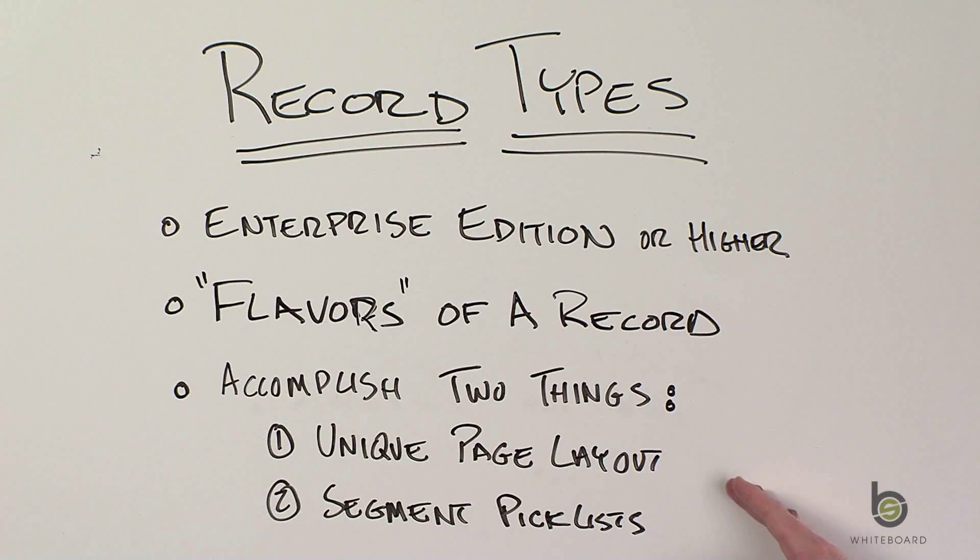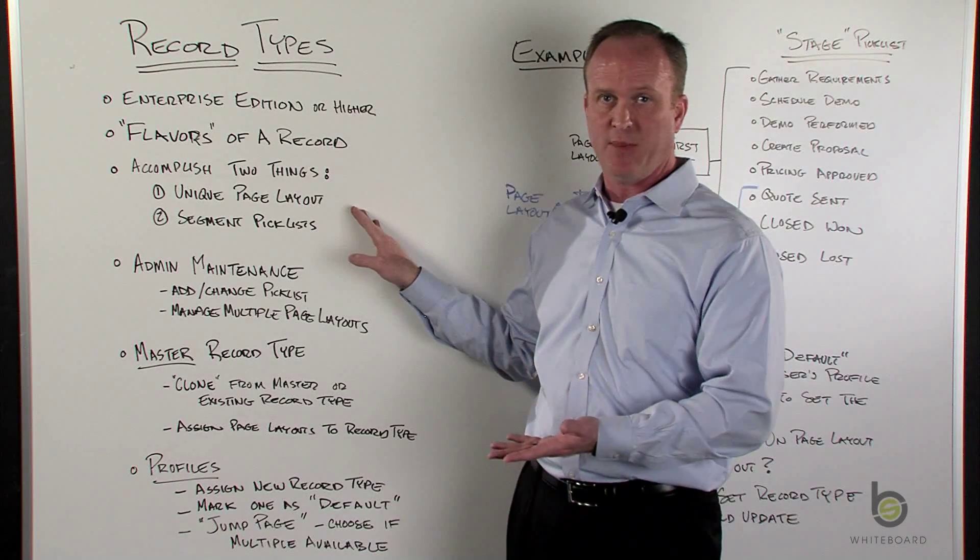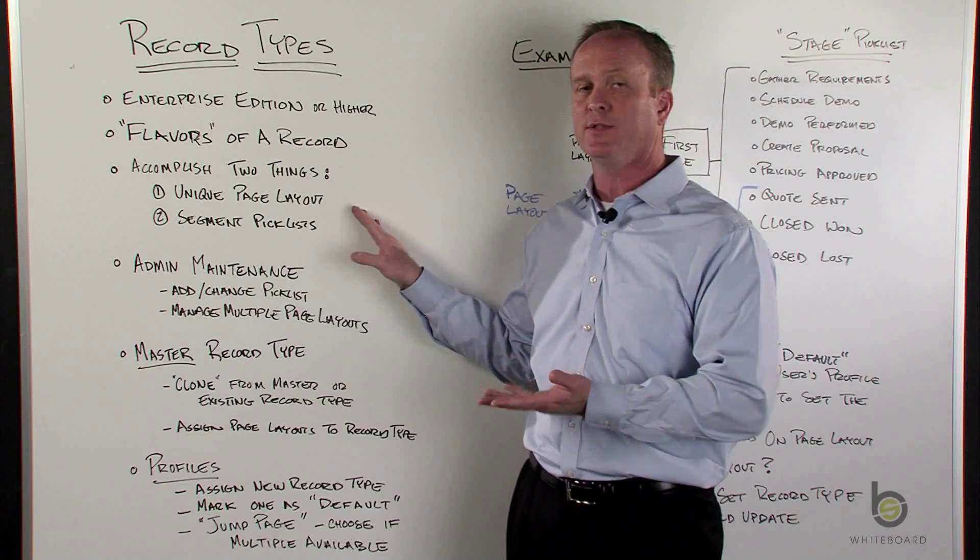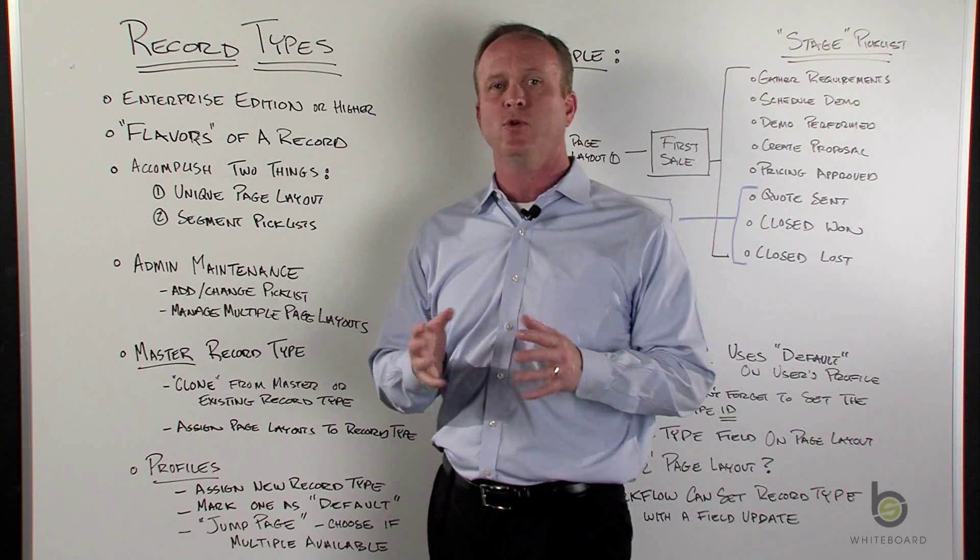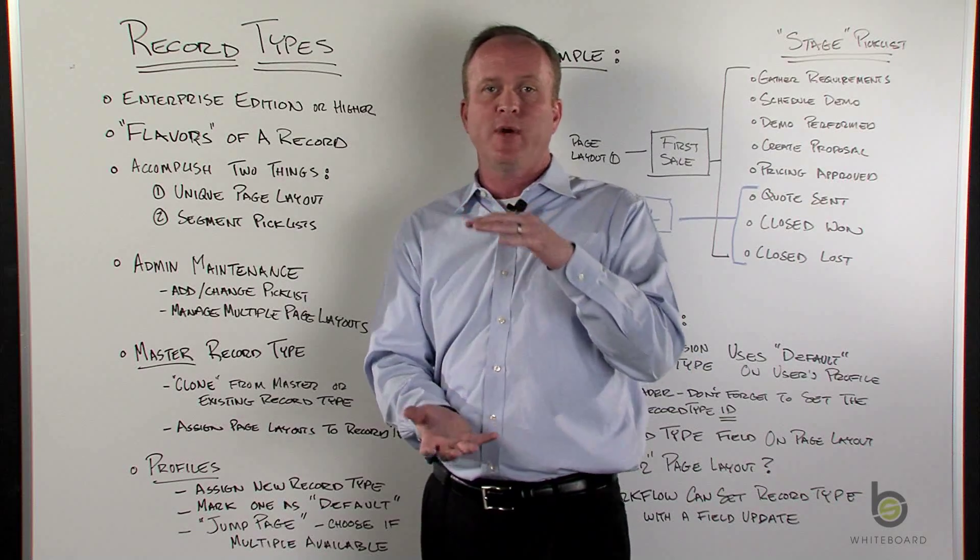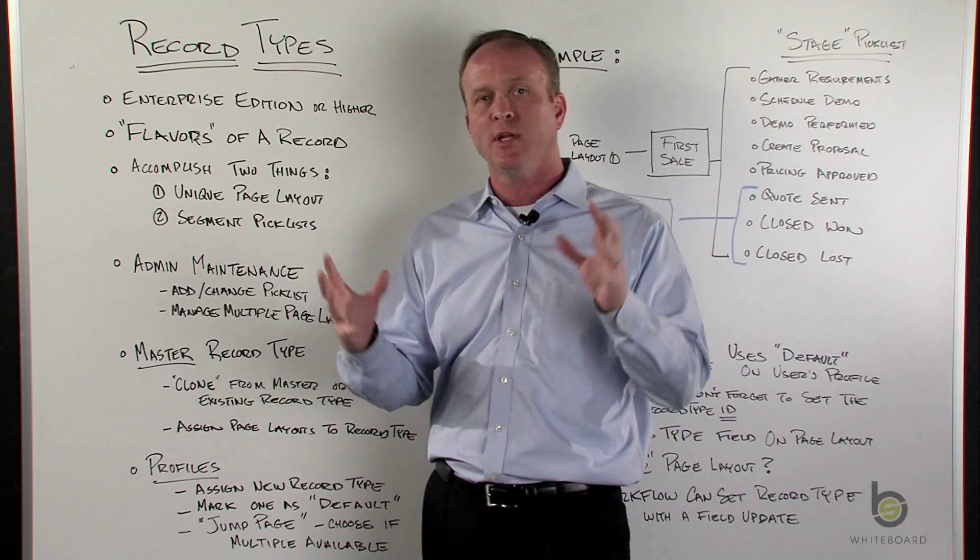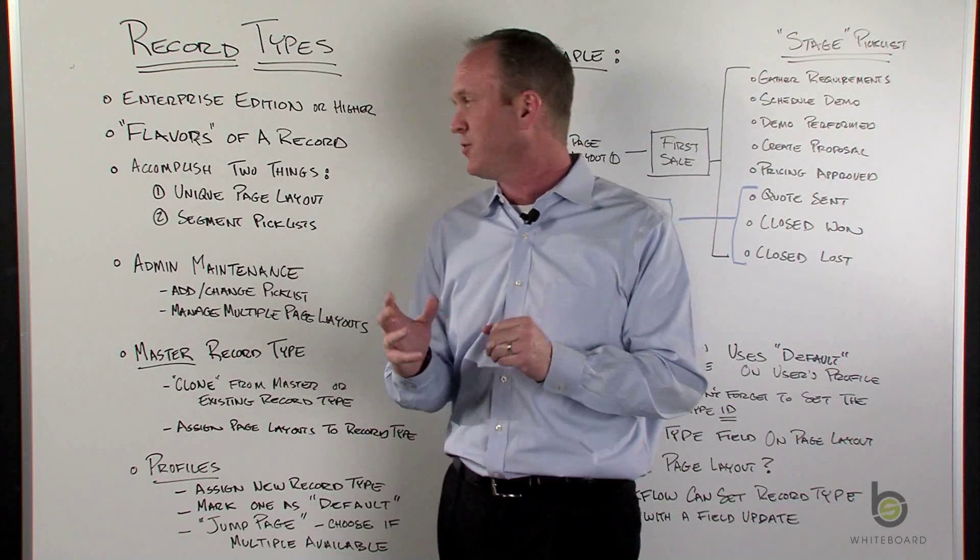You can have a unique page layout. So you could have a different account page for one record type which has, say, 40 fields. You can have another record type tied to a different page layout that maybe only has 20 fields. And the idea of a record type is you're really tailoring that user experience so they don't see too much information or information that has no bearing on that flavor of record.